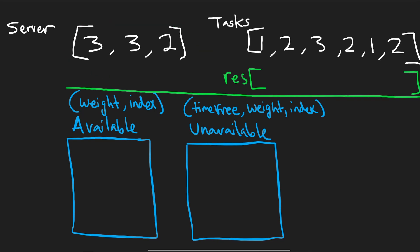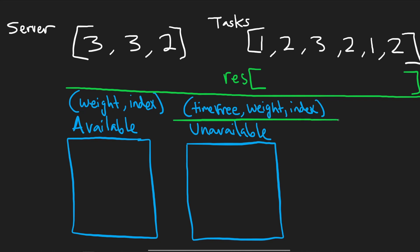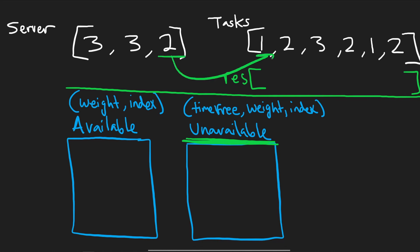Initially, we take every single server and add it to the available heap. The key for this heap is going to be a pair of values: first the weight, then the index — because we always want the smallest weight and use index as a tiebreaker. As we assign servers to tasks, they become unavailable and get added to the other min-heap of unavailable servers. For unavailable servers we actually use three values: the most significant is the time that server becomes free again, followed by its weight and index, because we'll be popping from this heap as servers finish their tasks.